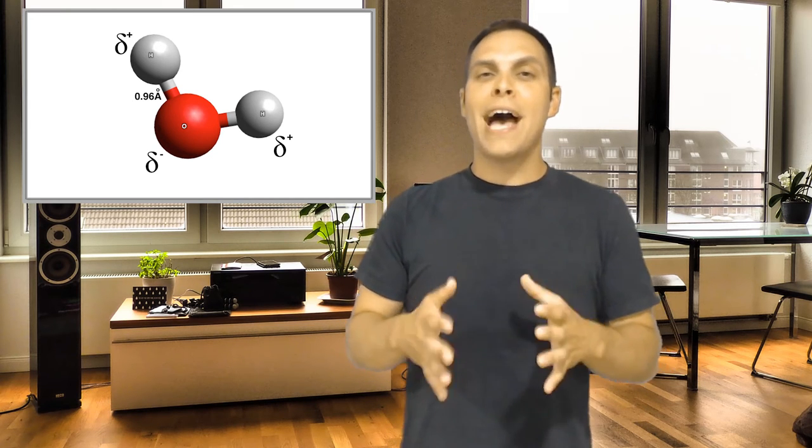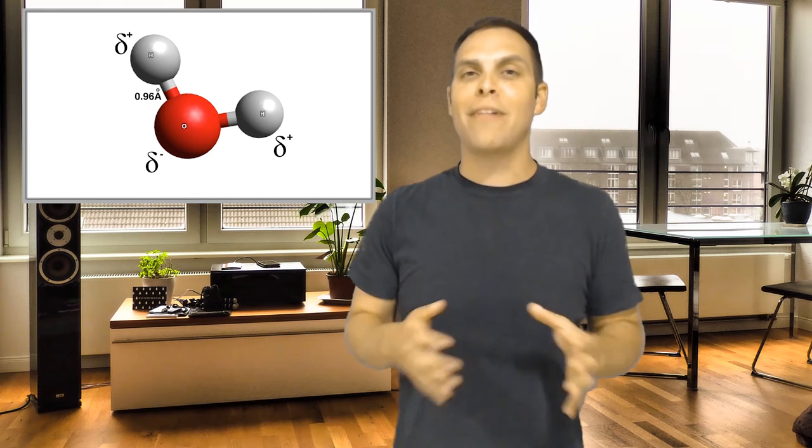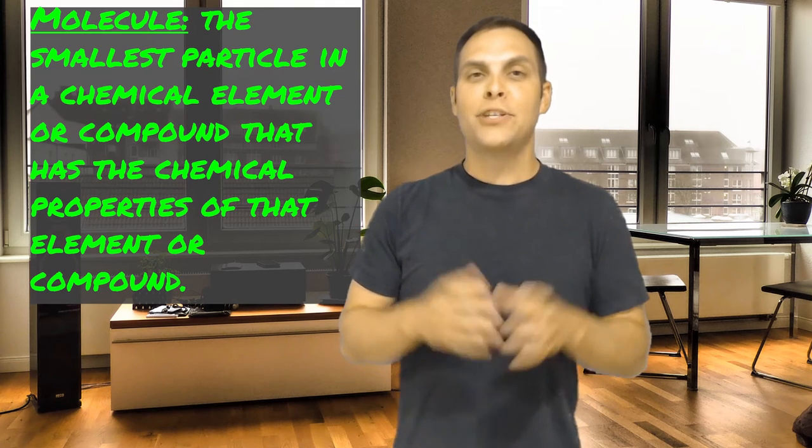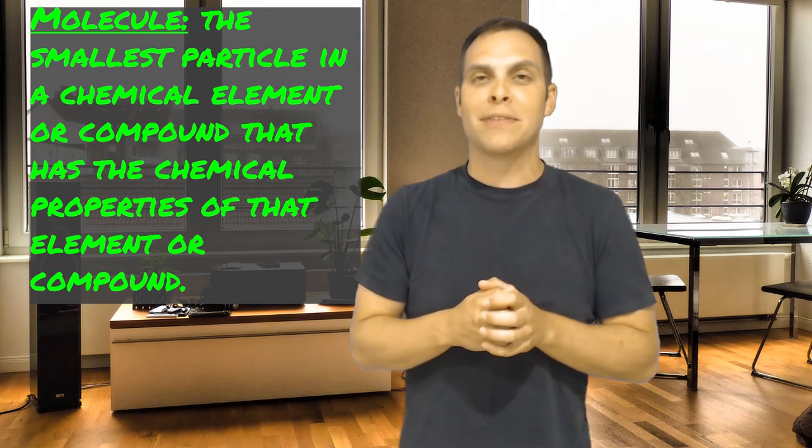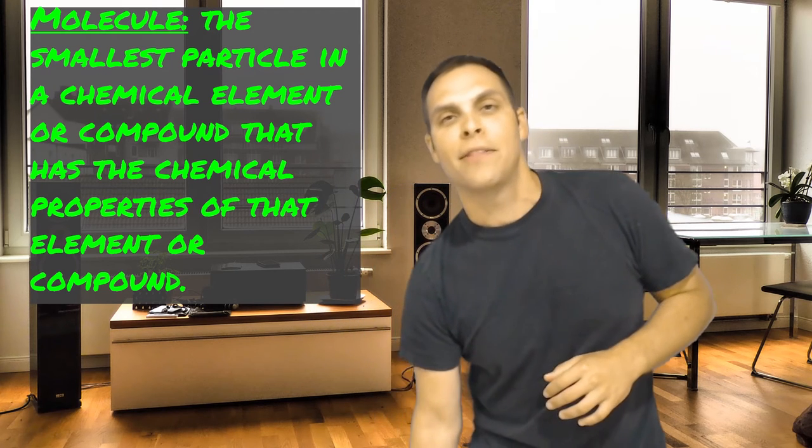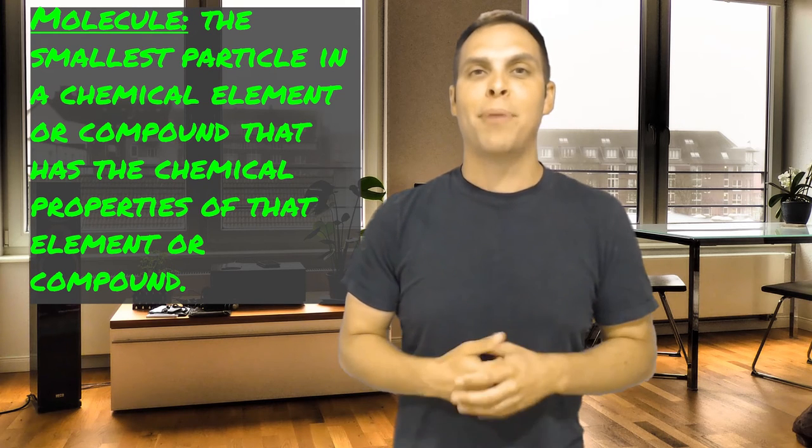Now, whenever we have covalent bonds occurring, polar or nonpolar, the end resulting compound is referred to as a molecule. And covalent bonds are the strongest of the three major bond types that we'll talk about today. So let's take a step down in the bond strength. Let's talk about ionic bonds.